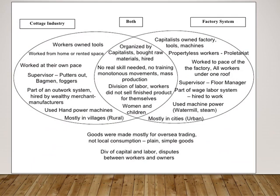This Venn diagram shows the cottage industry and factory system with some common factors. Both were organized by capitalists; they used to buy raw materials and hired laborers or workers, but goods were made mostly for overseas trading.